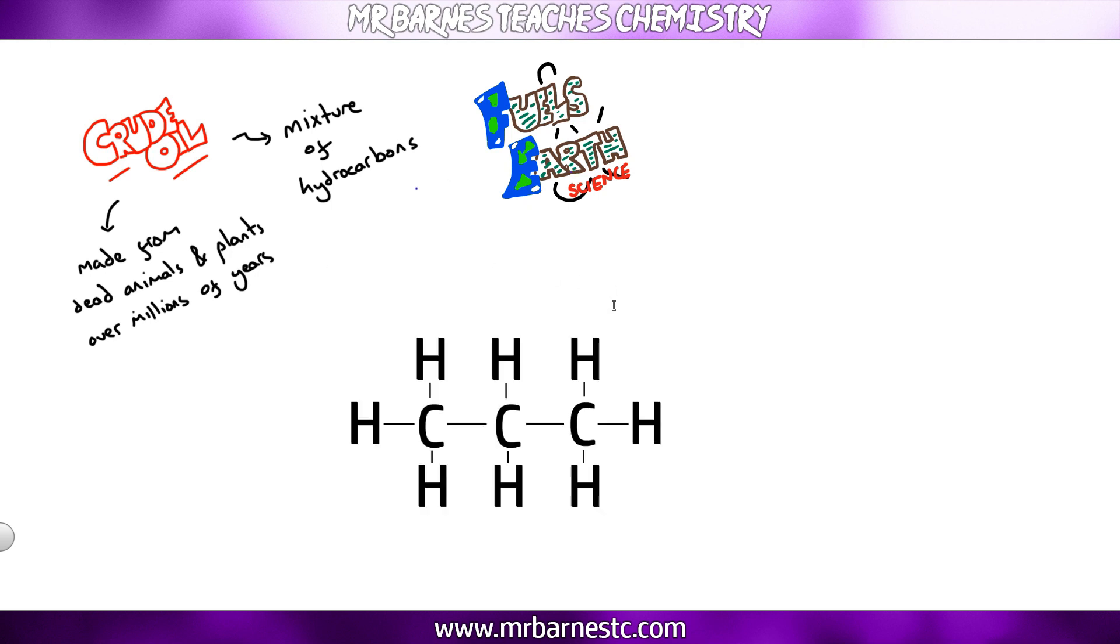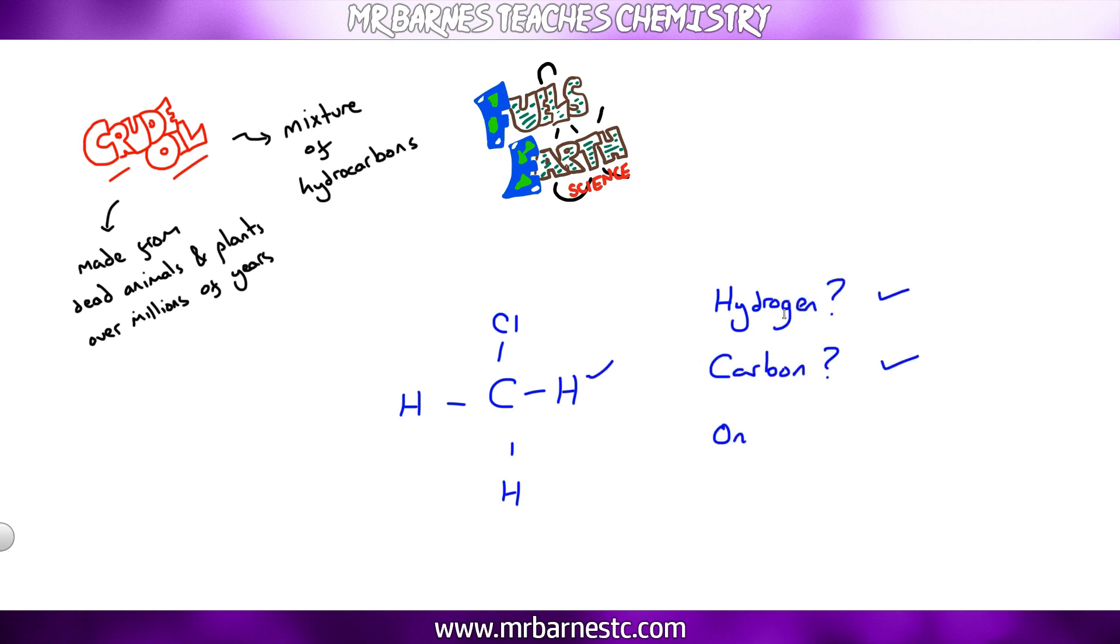So if we have a look at what a hydrocarbon is, nice and simply as you can see from my diagram here, it is something made up of hydrogen and carbon only. That word only is really important. For example, if I have a look at this molecule here which is carbon attached to three hydrogens and a chlorine, it's got hydrogen, it's got carbon. Does it just have hydrogen and carbon? No, it's got chlorine so it's not a hydrocarbon. So a hydrocarbon is something made out of hydrogen and carbon only.